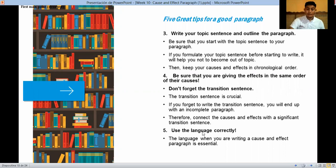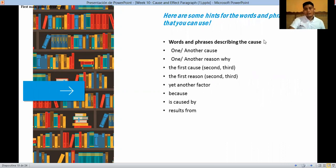And the last one, use the language correctly. The language that you are writing to cause and effect is essential. There are two words in phrases that you can use. Words and phrases for the causes: you can use one, another cause, one, another reason, right? The first cause, the second cause, the third cause. The first reason, the second reason, the third reason. The third cause is a result, yet another factor. The cause is caused by results. There are phrases that describe the causes. You can use when you are describing the causes.